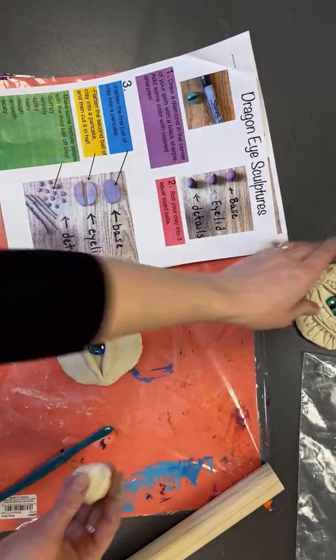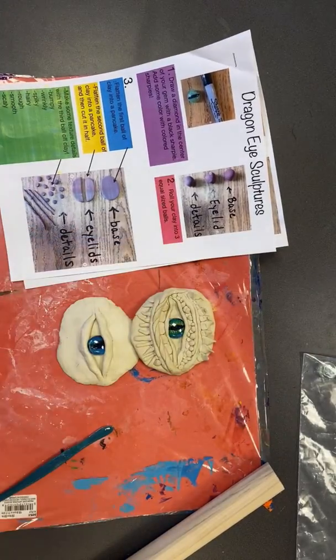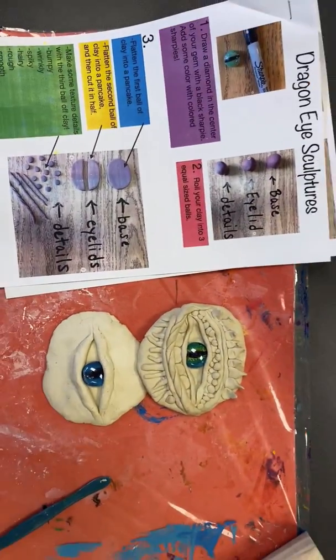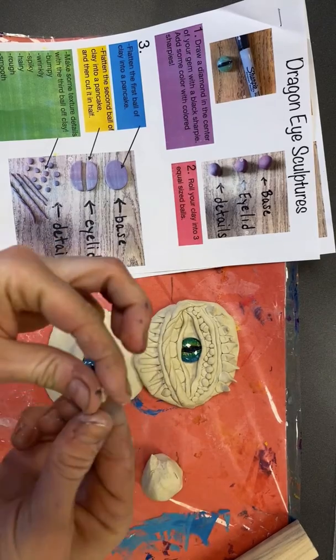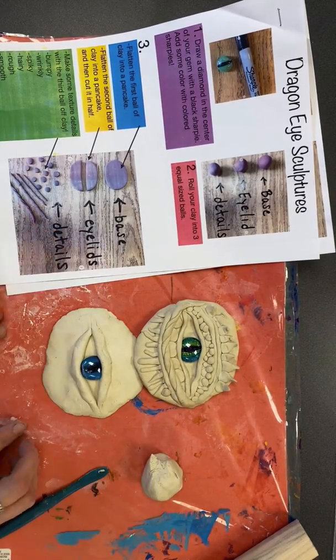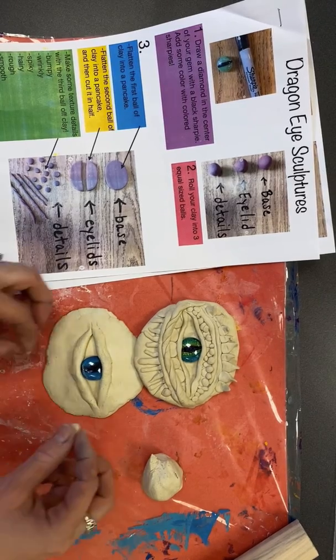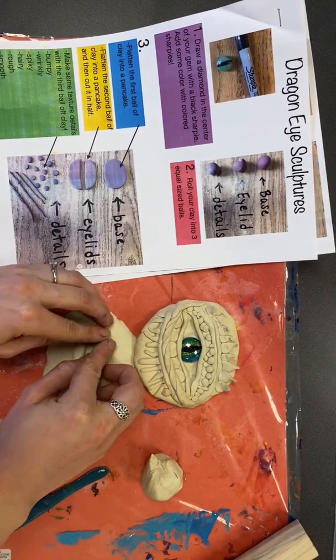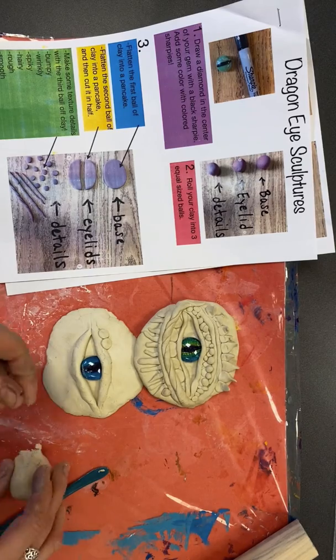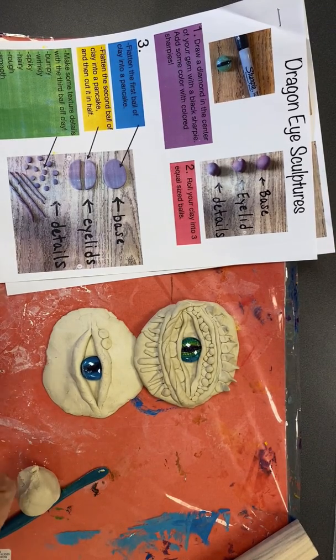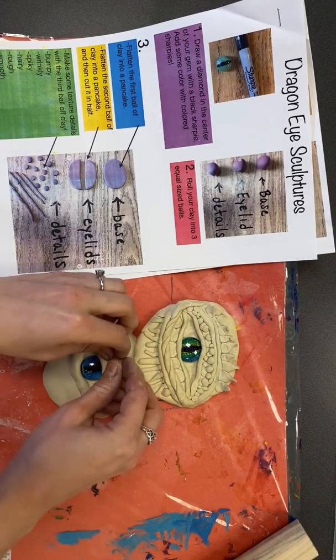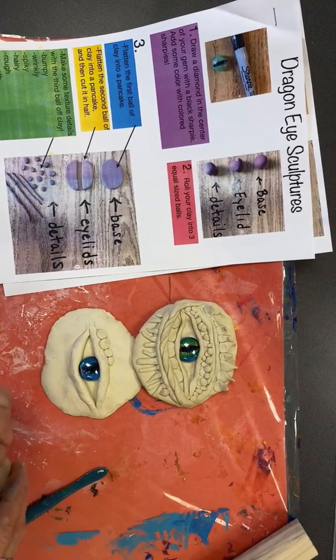So here's a bunch of ways that you can make some of those textures. If I want to make a bumpy texture, kind of like on my example here, what I can do is take little pieces of the clay, roll it with my fingers or roll it on my messy mat, flatten them out a little bit to make little bumps, and I can overlap some of these little bumps on parts of the dragon eye. I can make little bumps, big bumps, and flatten those out.